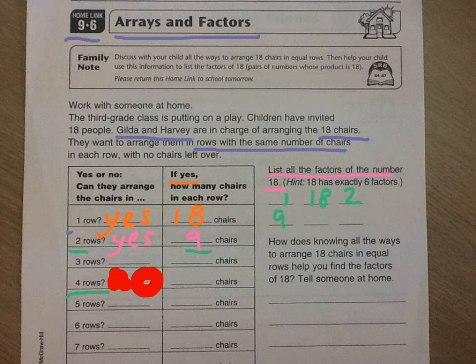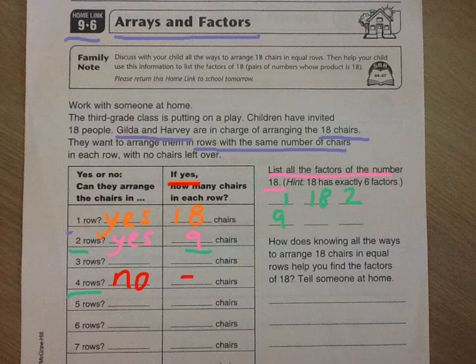So the answer for four rows is no, again a big no. And it says if yes up here remember, so we don't need to fill in that part because the answer is no for four rows. Now this is basically just this chair exercise, a way of getting you to understand the idea of factors.